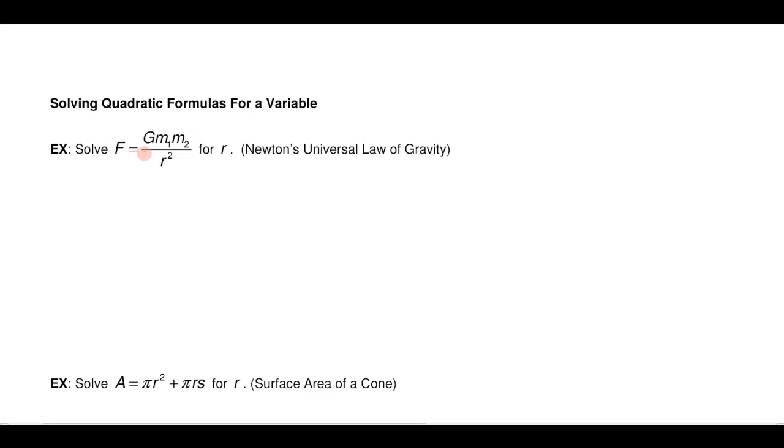For example, this is Newton's universal law of gravity. It says that the force is equal to some constant G times mass 1, mass 2 multiplied together in the numerator over the square of the radius. And if I'd like to solve this for r that means I want to get r all by himself on one side.